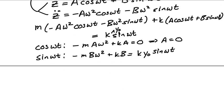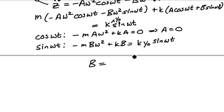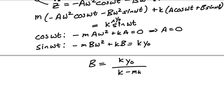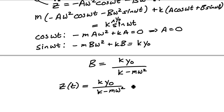The solution is z(t) equals k y_naught divided by (k minus m ω²) times sin(ωt), where ω equals 2π v divided by the wavelength L.